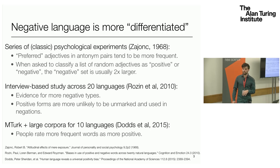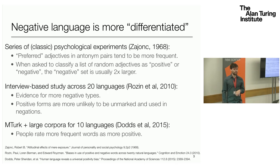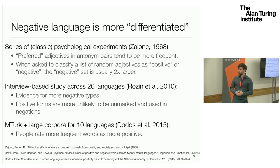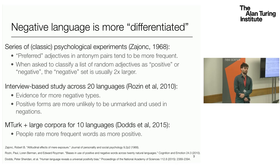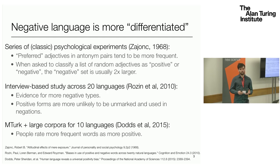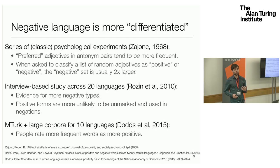There have been a number of follow-up studies on this idea. A more recent study by Rosen et al., an interview-based study, showed that this general trend seemed to hold across 20 different languages. And then even more recently, there's the Peter Dodds paper I referred to, which used crowdsourcing — specifically Mechanical Turk — to show that overall across 10 different languages, words that people rate as being positive tend to be much more frequent.